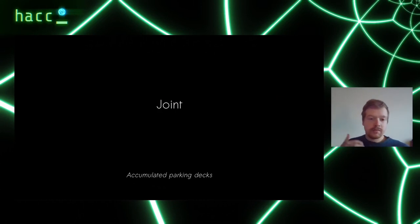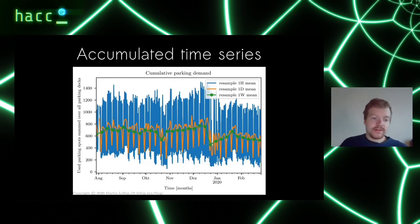With that in place, we take a look at the joint data, meaning I accumulate the number of used parking spots across all parking decks. It's a comprehensive picture. I started data scraping in August 2019 and stopped at the end of February 2020. This data here is at different resample frequencies of the original raw data. I started with a resample of one hour, resampled to one day in orange, and lastly one week. The orange curve shows there might be some periodicity, and the green one shows weeks with particularly little parking demand, for instance around Christmas 2019.